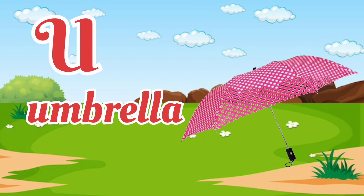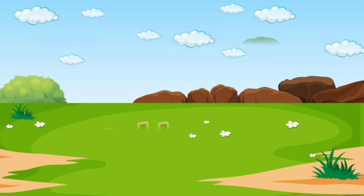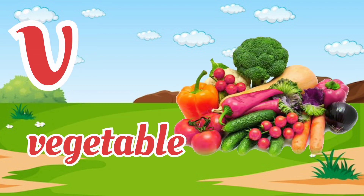U for umbrella. Umbrella means chata. V for vegetable. Vegetable means vegetable.